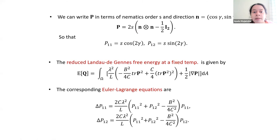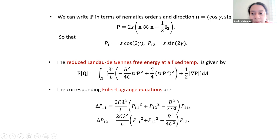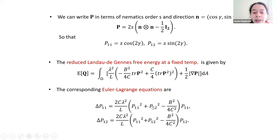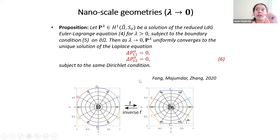The parameter λ is a geometrical parameter — proportional to the size of the 2D domain divided by L, the elastic constant. The Euler-Lagrange equations are just the Ginzburg-Landau PDEs: a system of two nonlinear elliptic coupled PDEs in P₁₁ and P₁₂. We work in two different asymptotic limits. The first limit is λ → 0 (nanoscale / small geometries), where we can solve the limiting problem exactly because you're just solving a Laplace problem. We were looking at polygons with a prescribed Dirichlet boundary condition.